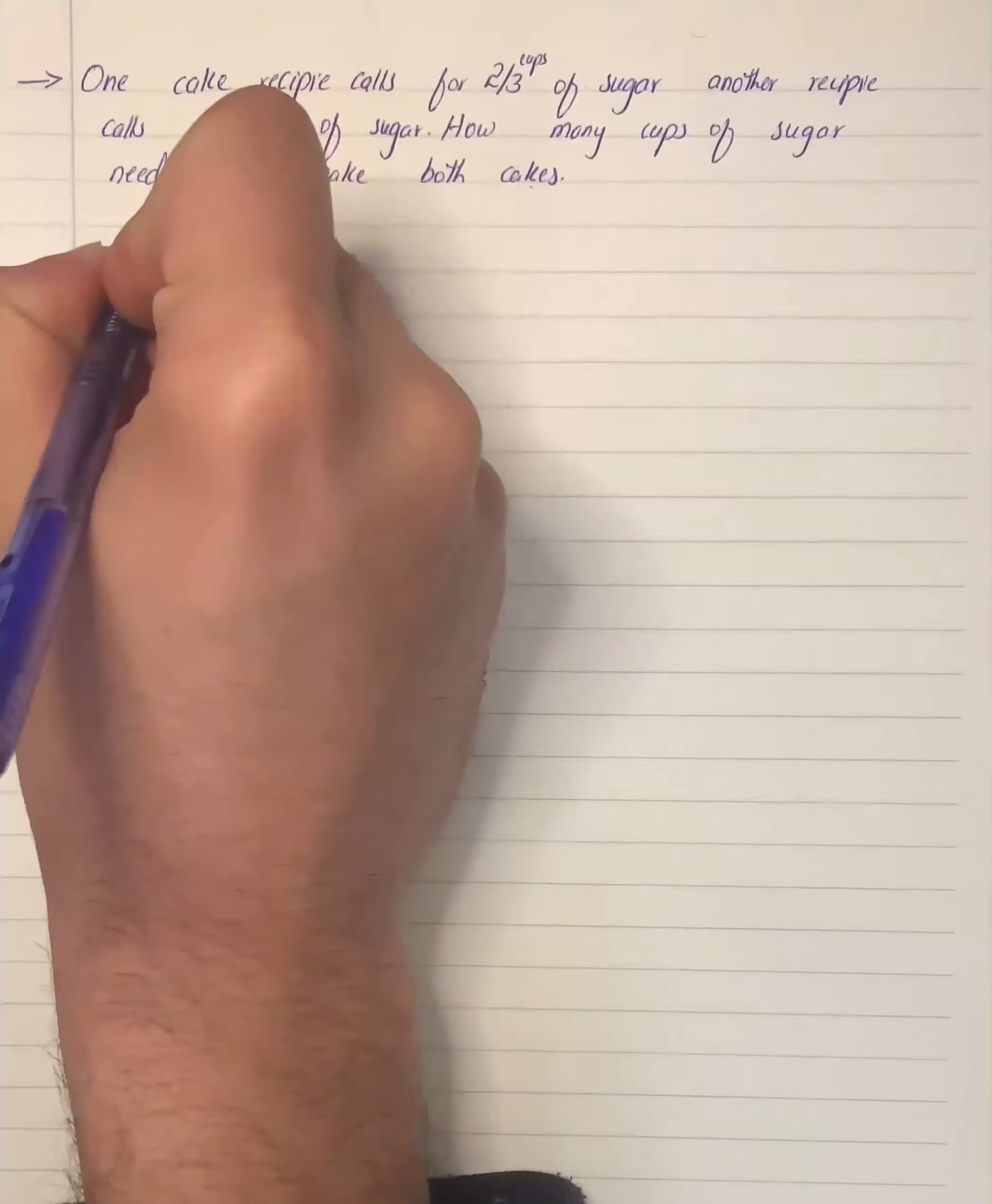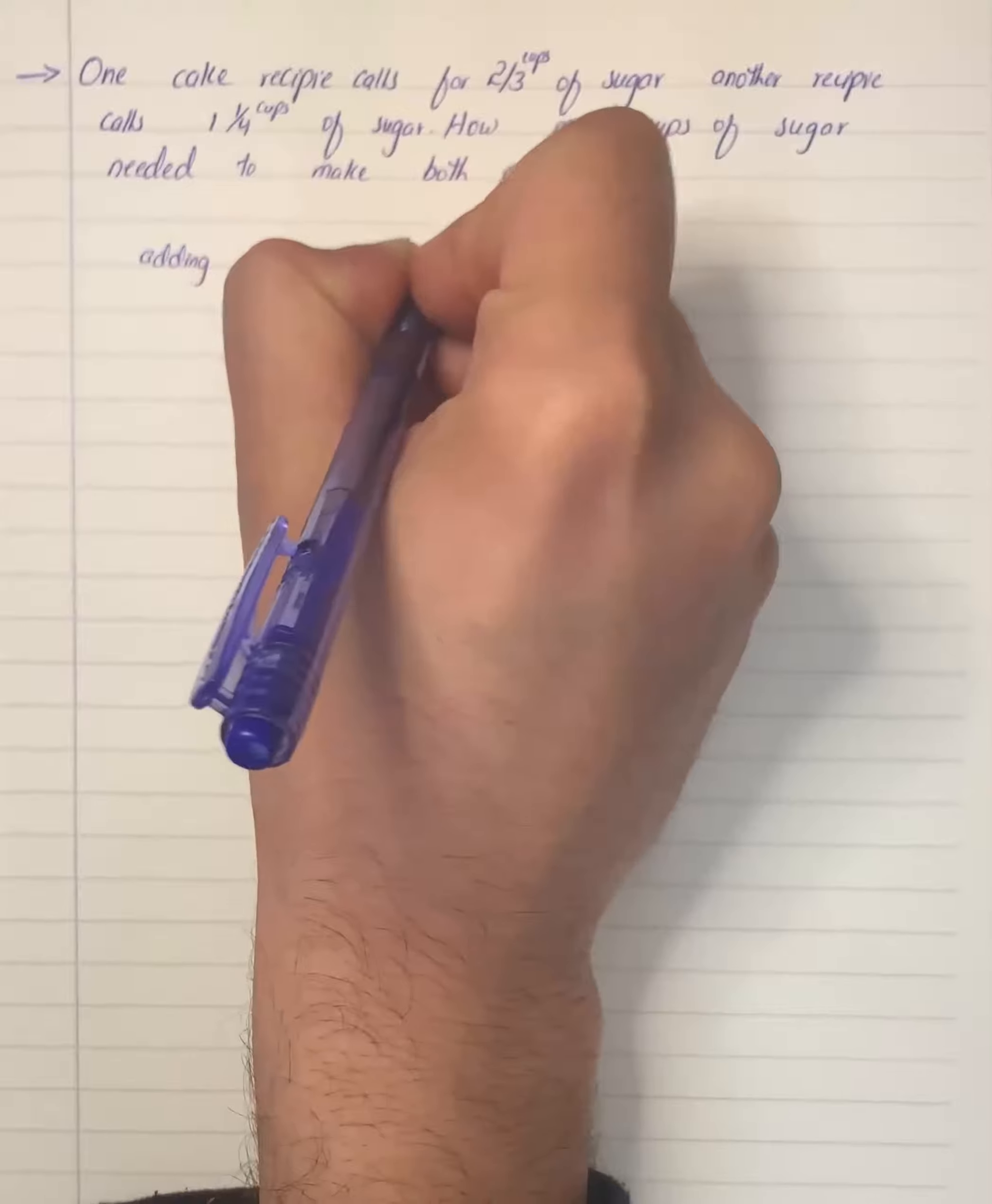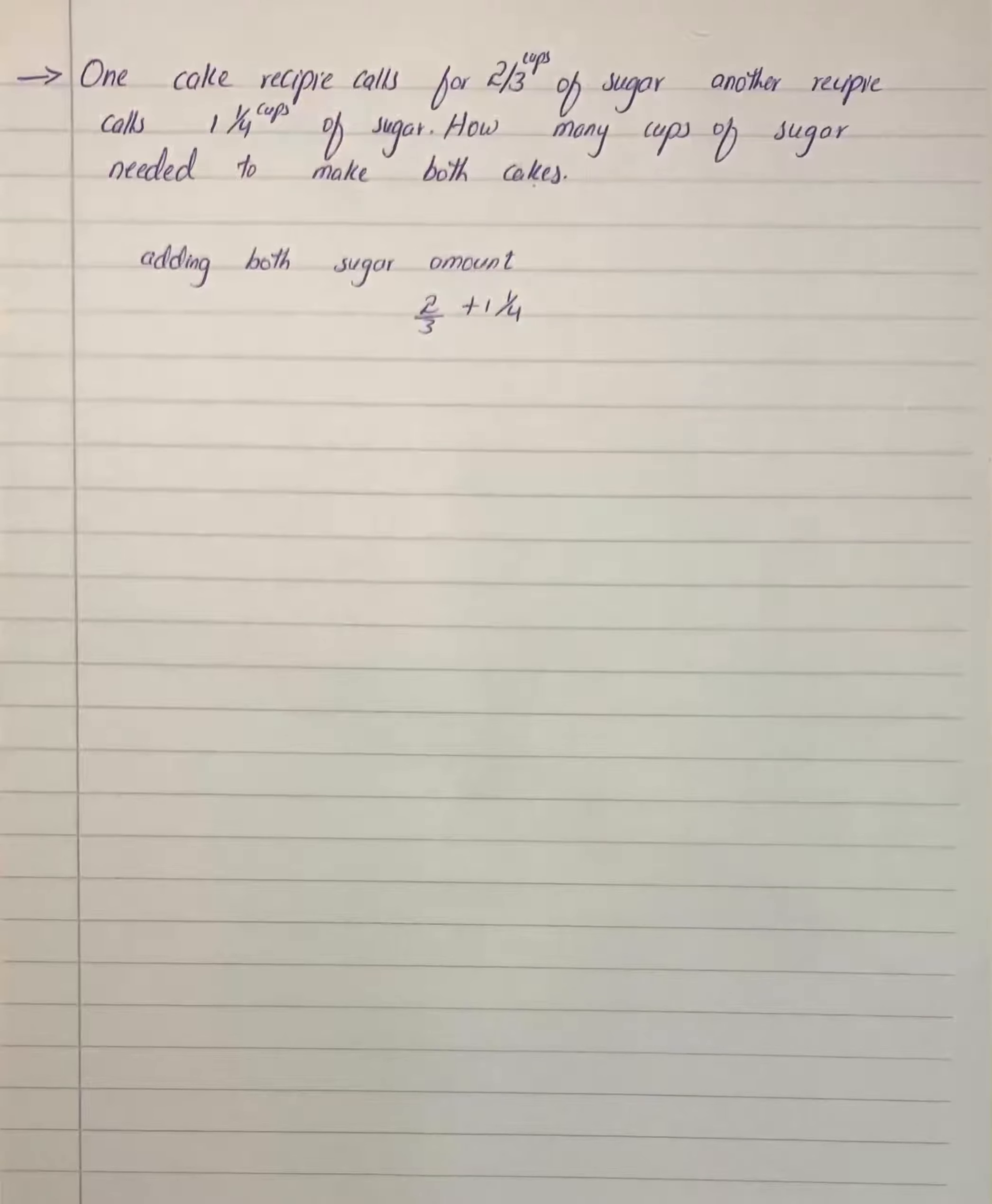Let's start. We will add both sugar amounts. The sugar amounts we have are two-thirds plus one and one-fourth. We will write the mixed fraction as an improper fraction.